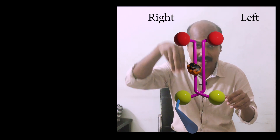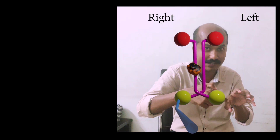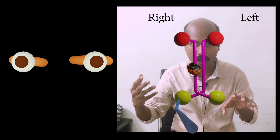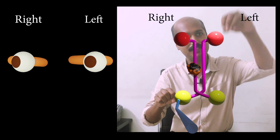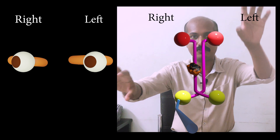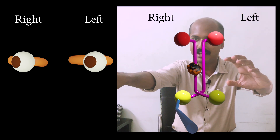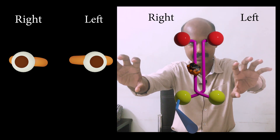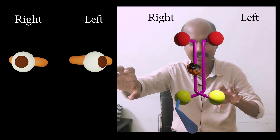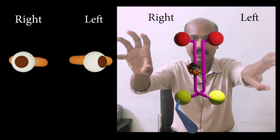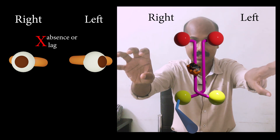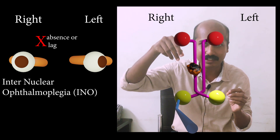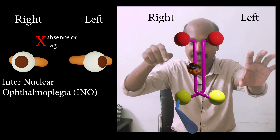Now consider a lesion affecting only the right MLF. The right MLF carries interneuronal fibers from the left abducens nucleus. With the right MLF affected, right lateral gaze is intact because the right abducens nucleus is fine and innervation to the right lateral rectus is also fine. However, on attempted leftward gaze, while the left eyeball abducts normally, the yoking tract toward the oculomotor nucleus is affected, causing an absence of adduction of the right eyeball. This is called internuclear ophthalmoplegia (INO).